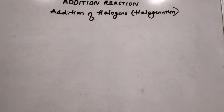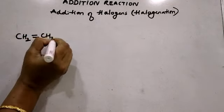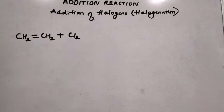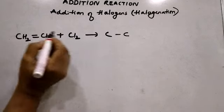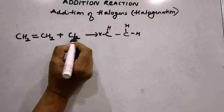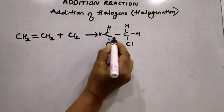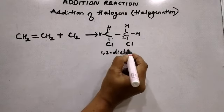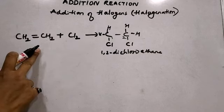Another addition reaction involves adding halogens to carbon compounds — this is halogenation. If ethene is treated with chlorine at room temperature, the carbon-to-carbon double bond breaks and a single bond is formed, converting the unsaturated hydrocarbon into a saturated one. Two hydrogen atoms remain attached, and one chlorine atom attaches to each carbon atom, forming 1,2-dichloroethane. This reaction of adding a halogen to a carbon compound is called halogenation.